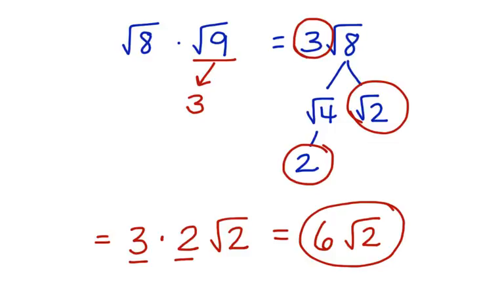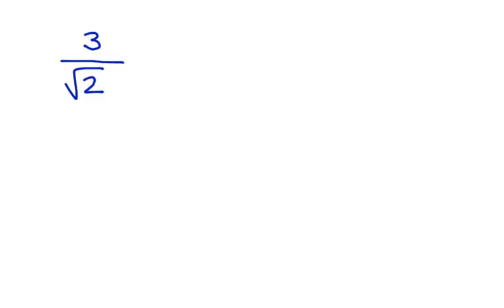Let's look at one that involves division. Here we have 3 divided by the square root of 2. This fraction bar is being used to represent division. Now whenever you see a problem like this, we have to rationalize the denominator to get rid of the square root.